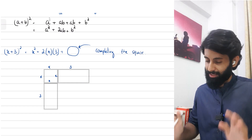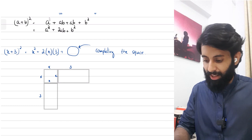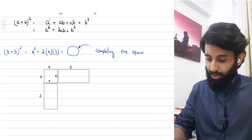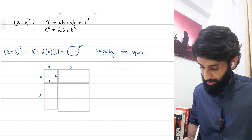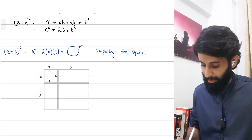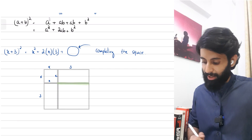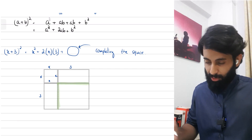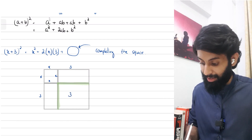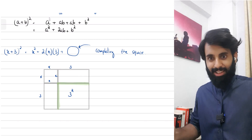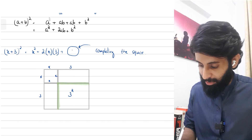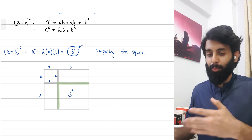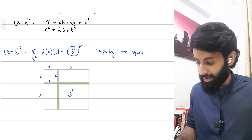What you're doing here is basically completing the square. To complete it, what exactly should I add? The missing piece in the corner — its length on both sides is 3, since it's a square. So what I need to add is simply 3², and that's how I complete the square. That's why 3² goes there.